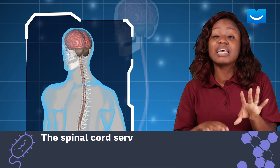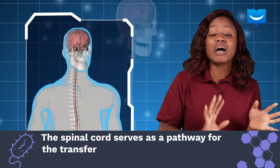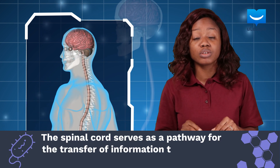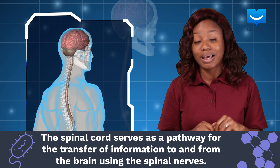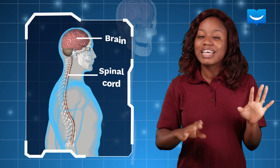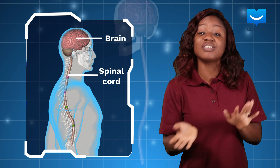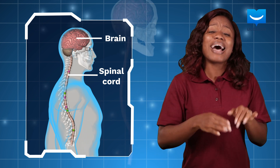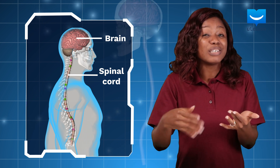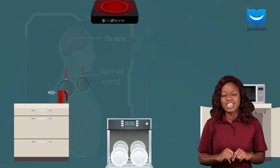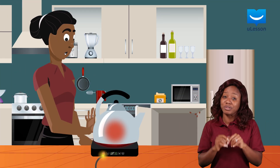The spinal cord serves as a pathway for the transfer of information to and from the brain using nerves. That is, it receives information from the body and carries it to the brain, and sends impulses to the body from the brain.